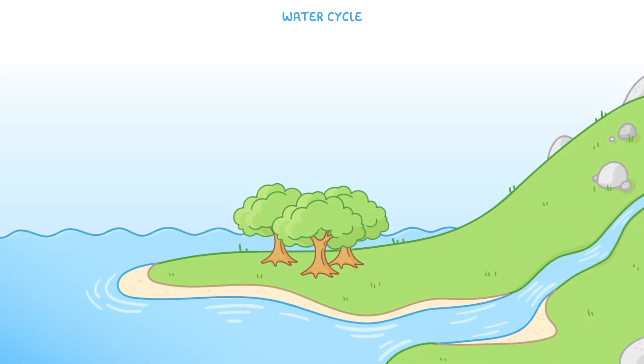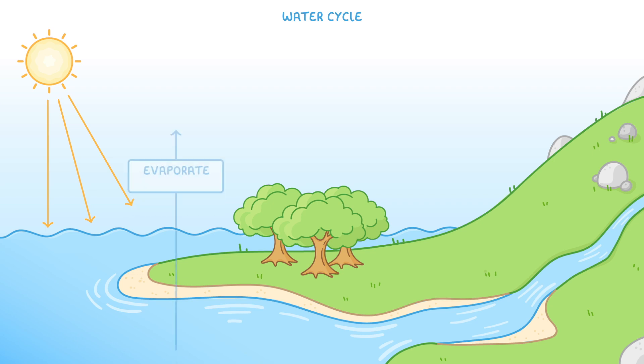Let's start with what the water cycle is and cover how water cycles between the land, oceans, and atmosphere. Because it's a cycle, we can start our explanation anywhere. So let's say that our first step is that energy from the sun comes down and causes some of the water to evaporate.